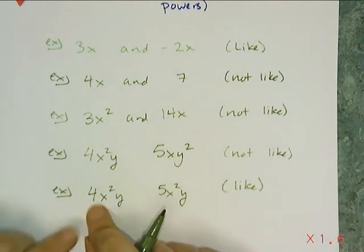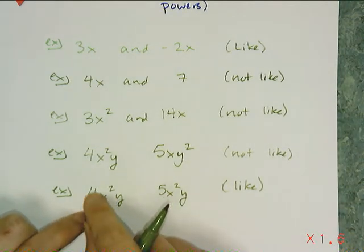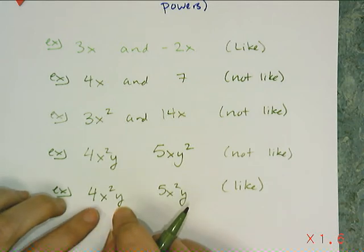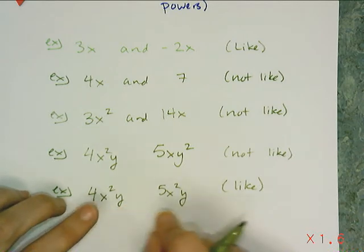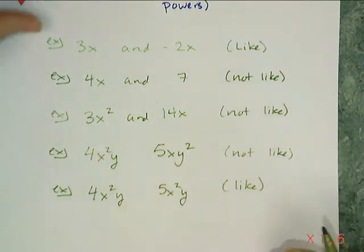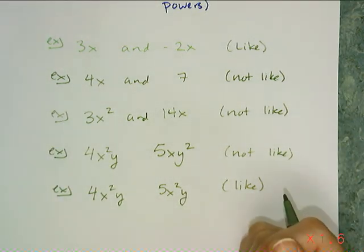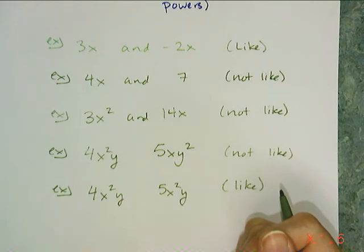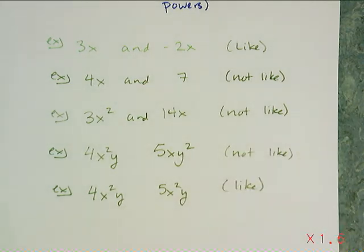And the way I do that is by adding the coefficients. This number here, the coefficient, tells me how many x squared y's I have. So I have 4x squared y's here and 5x squared y's here. So if I added them together I would get a total of 9x squared y. And doing that combination or turning them into a single term is called combining like terms.